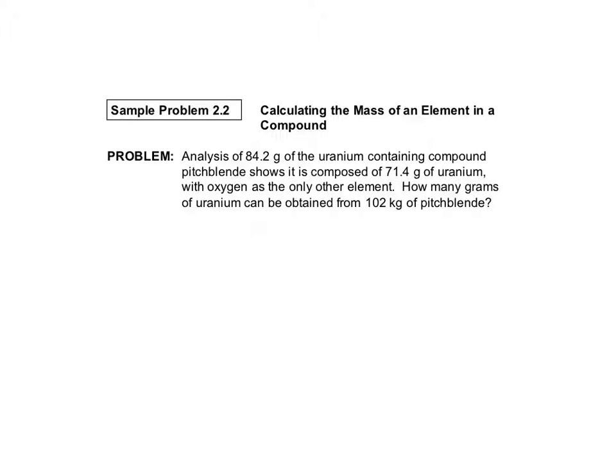It says that we have this pitchblende sample, and there's 84.2 grams of that. So 84.2, and I'm going to use PB to represent pitchblende, shows that this is composed of, so in this sample here, there's 71.4 grams of uranium.